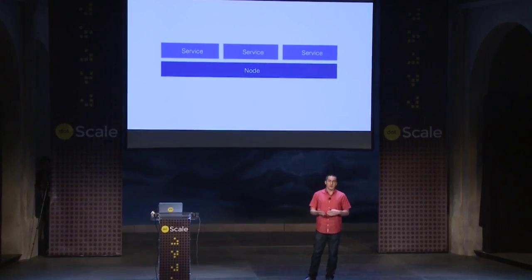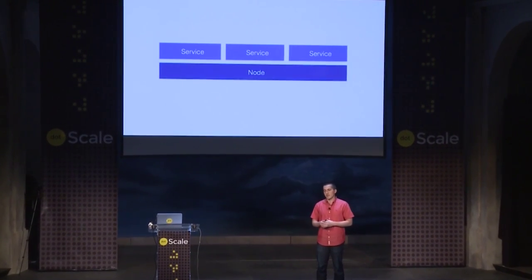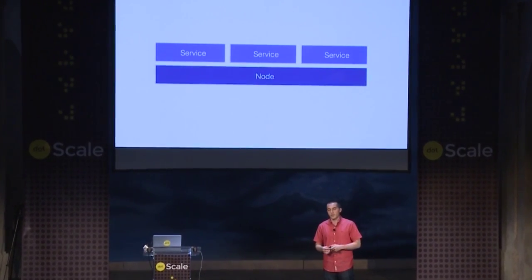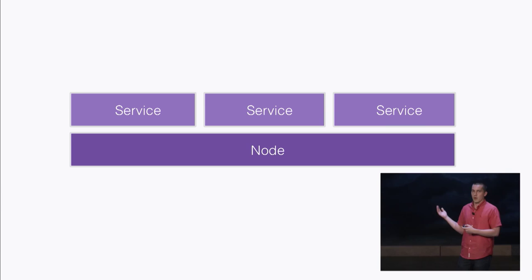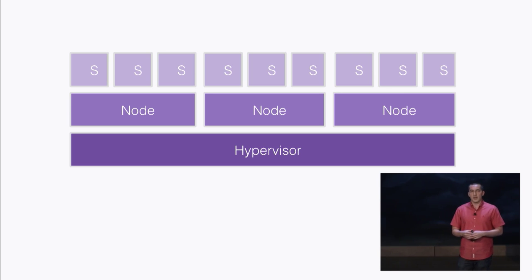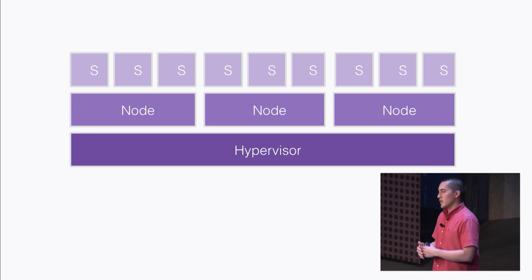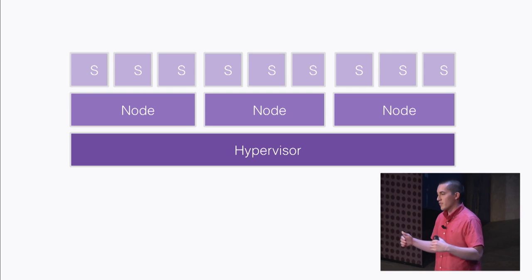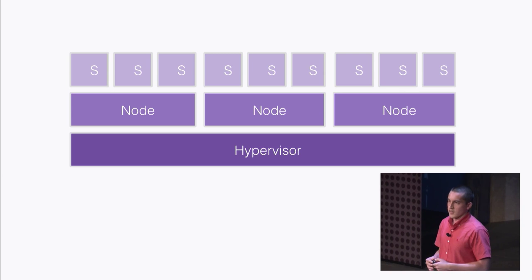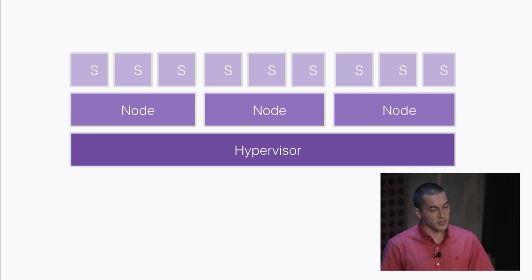Not too long ago — less than two decades ago — most web service deployments looked something like this: you would have a single node on top, just a bunch of services, and things were pretty easy. You knew things were on localhost on different ports, and it was pretty easy to make things work as long as you kept that one node alive. Very quickly after that, virtualization took over and gave us our clouds, with a hypervisor, multiple operating systems, and services on top — and things got a little trickier in terms of where to find those services.